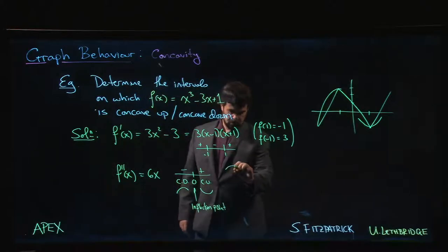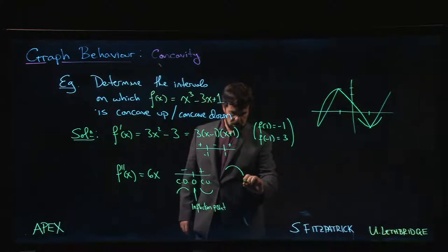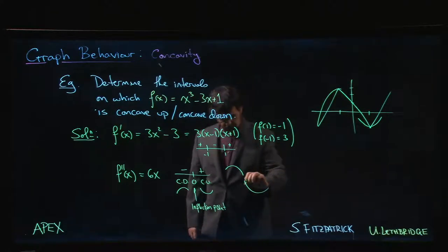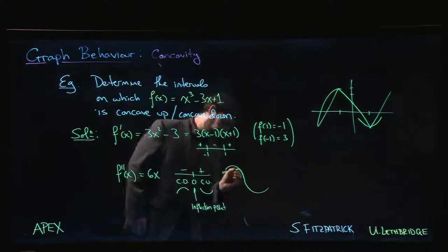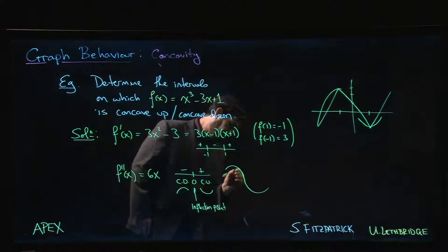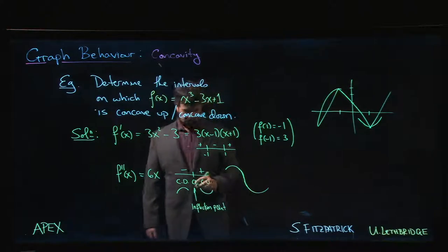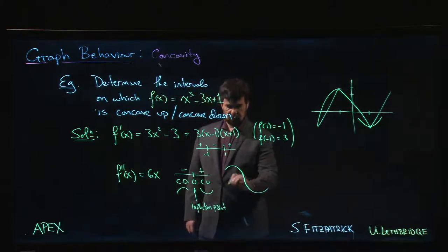is you're switching from being concave down to concave up. So it's that point there where the graph almost kind of becomes a straight line for a second. It's curving down, it's flat, and then it starts curving up again.